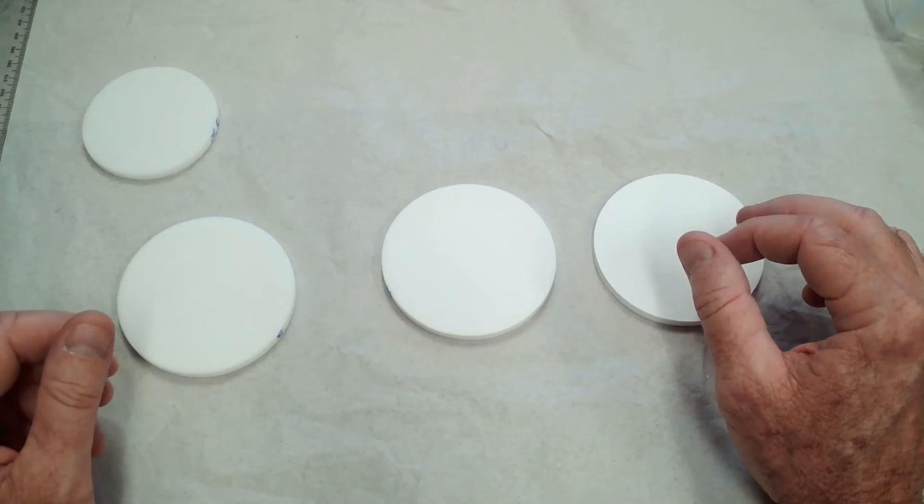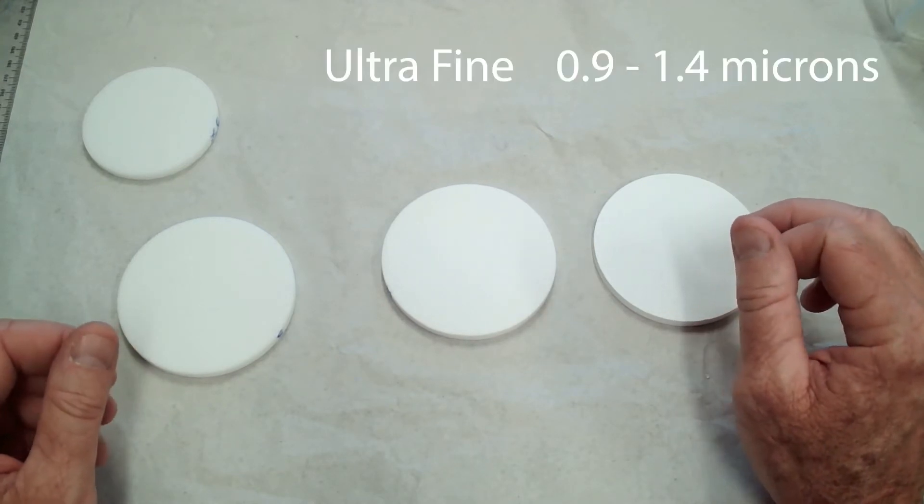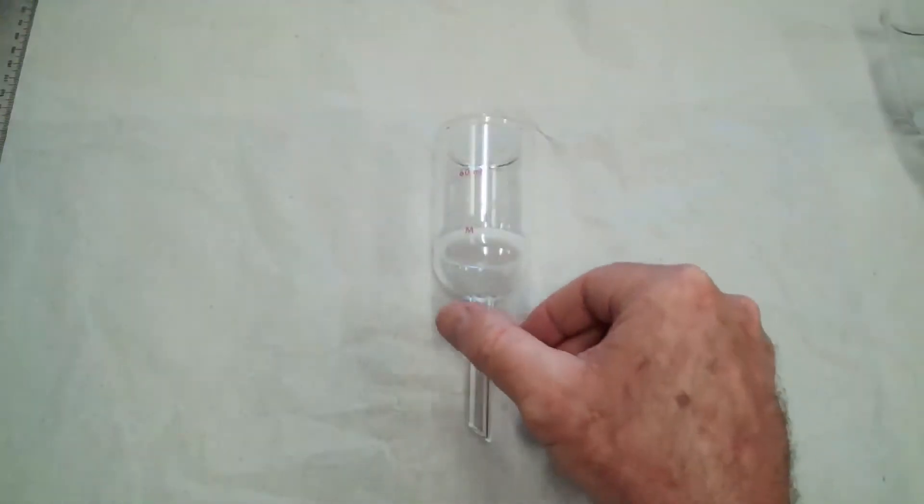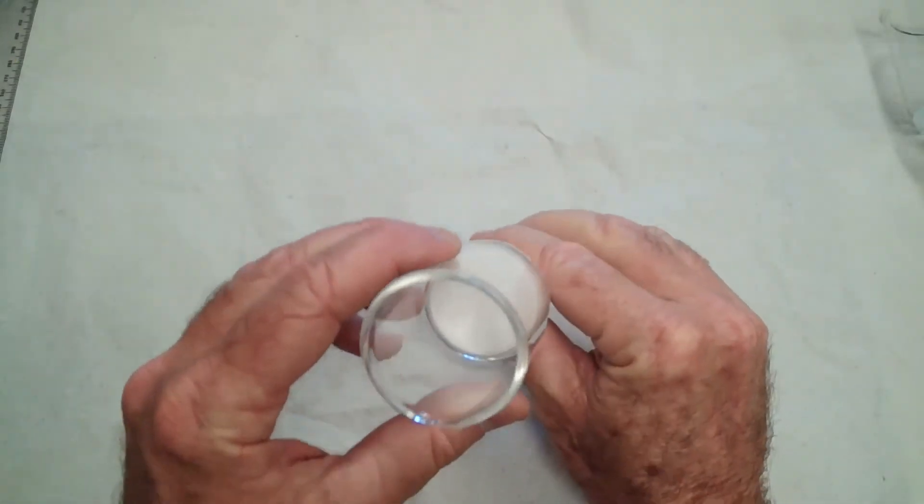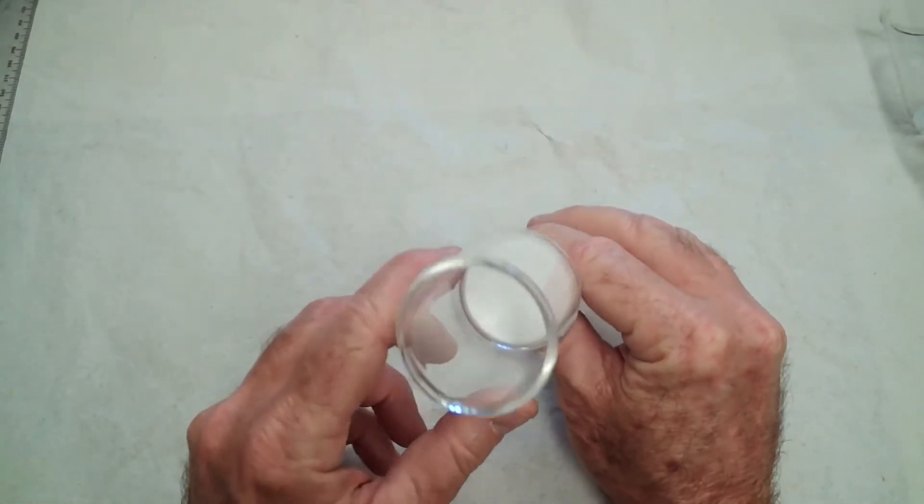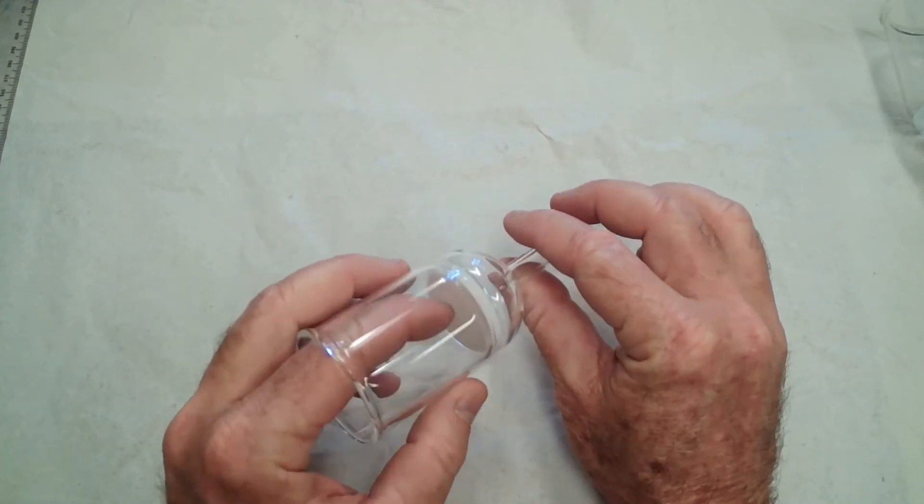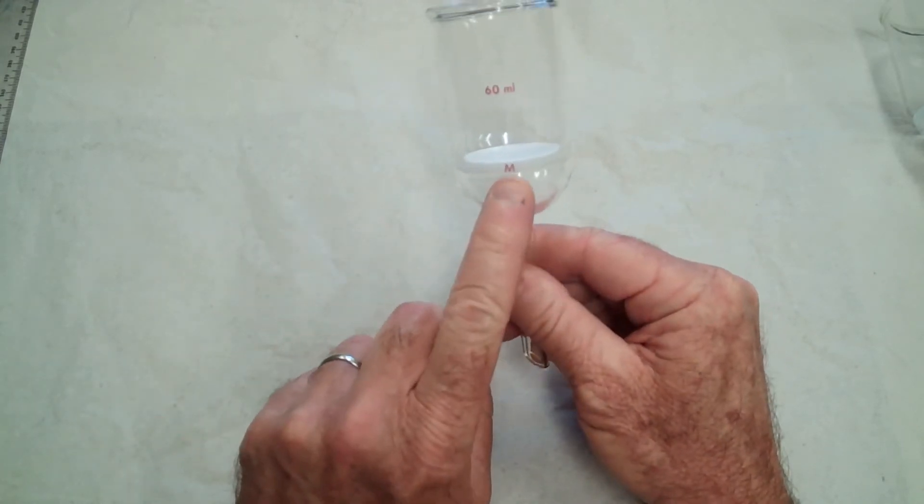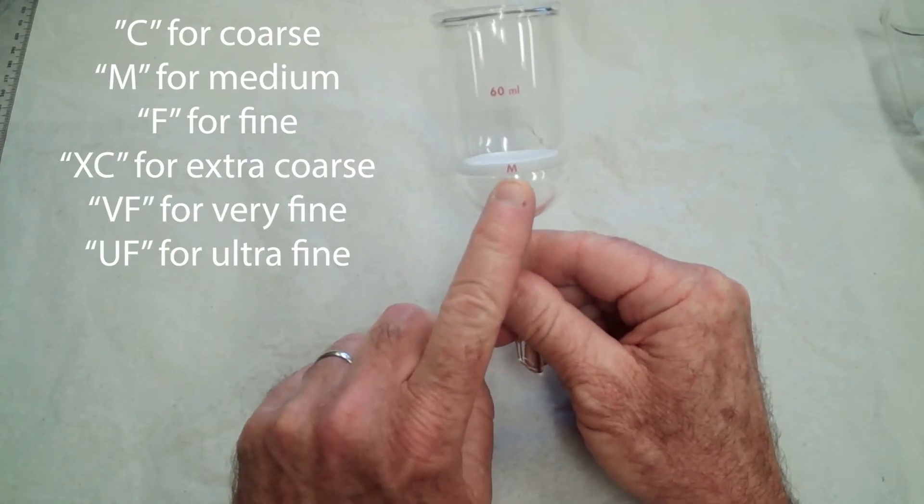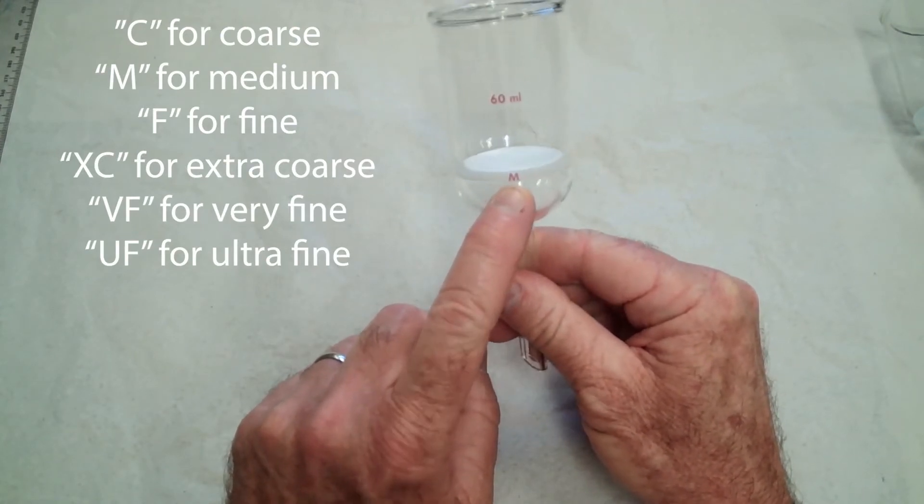When looking at a piece of apparatus that has a fritted disc in there, it's really hard to tell what the porosity is. Every apparatus should have a letter designation. In this case, this is M for a medium frit.